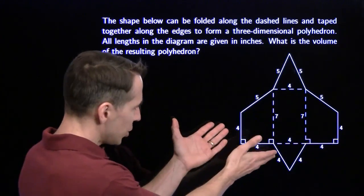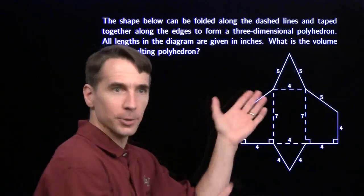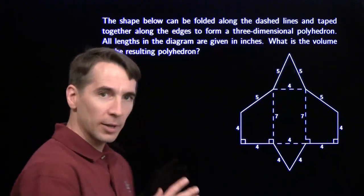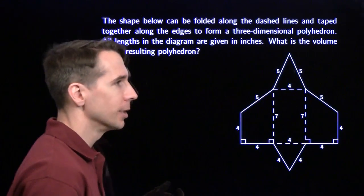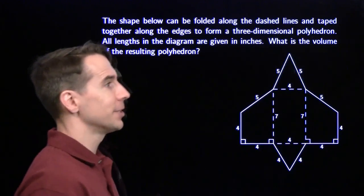Here we go. We've got a shape here that we can fold along these dashed lines to form a three-dimensional polyhedron of some sort, and we have to find the volume of this polyhedron. You see it, Harv? Yeah, yeah, I know. You see everything, even stuff that's not even there.